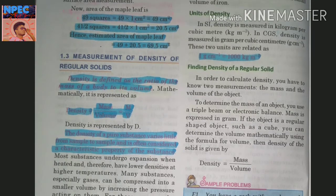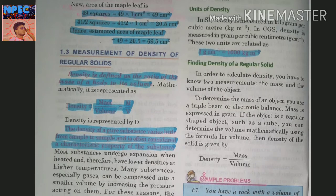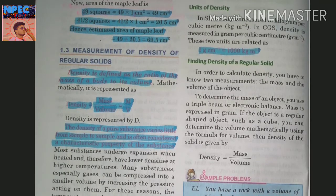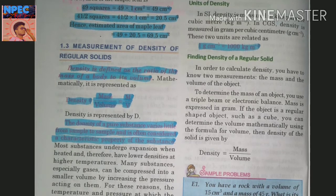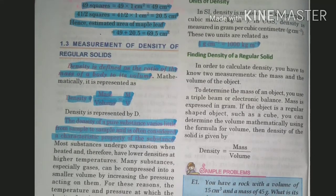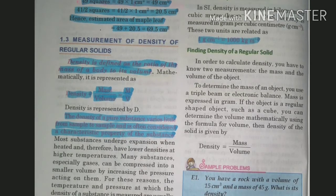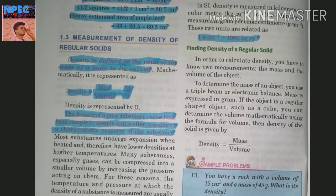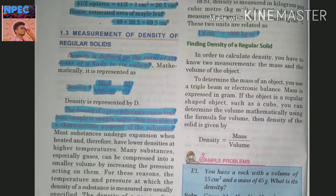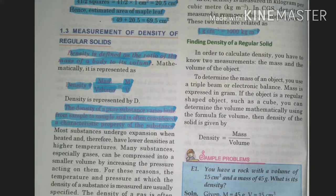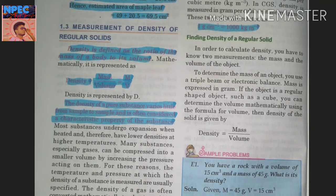Capital D represents density. The density of pure substances varies little from sample to sample and is often considered a characteristic property of the substance. Jo bhi pure substance hoti hai uski density thoda bahut sample to sample vary karti hai aur isko characteristics property maana gaya hai.